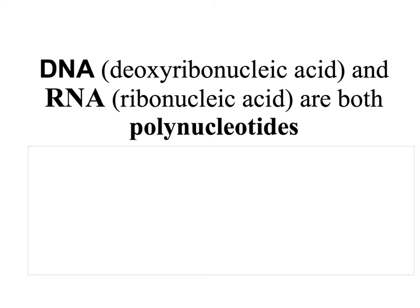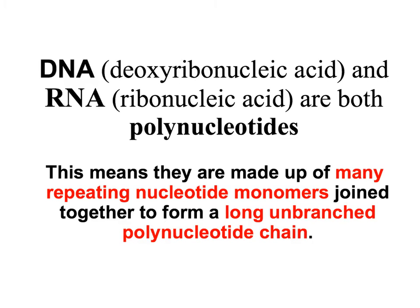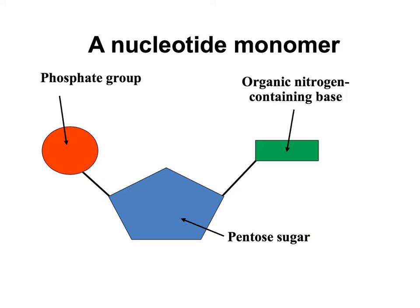DNA and RNA are both polynucleotides. This means they are made up of many repeating nucleotide monomers joined together to form a long unbranched polynucleotide chain. A nucleotide monomer is always made up of three parts: a phosphate group, a pentose sugar, and an organic nitrogen-containing base. In RNA, the 5-carbon pentose sugar is called ribose.